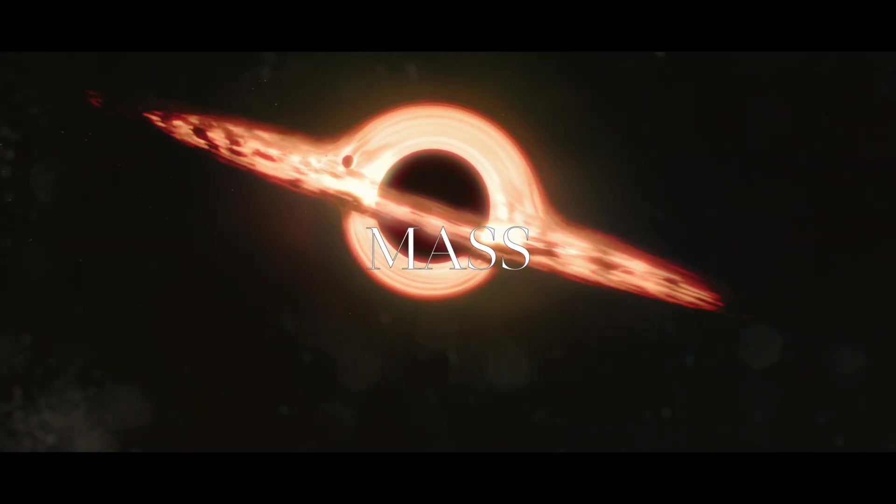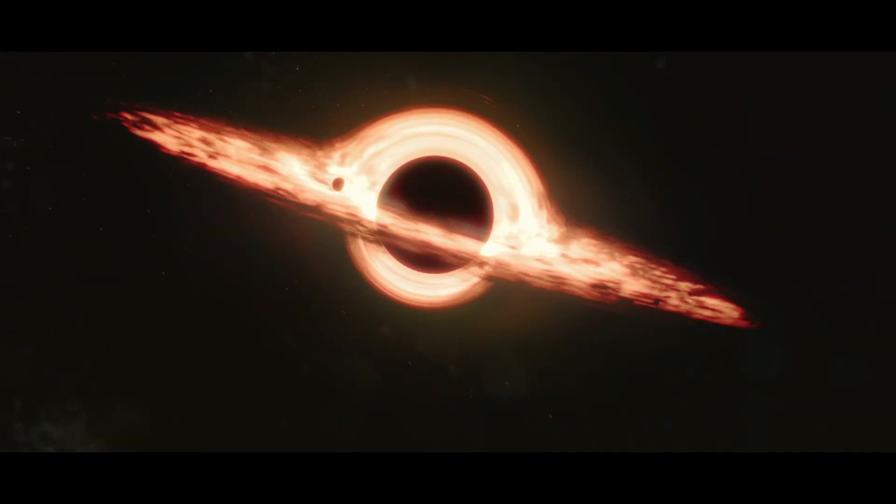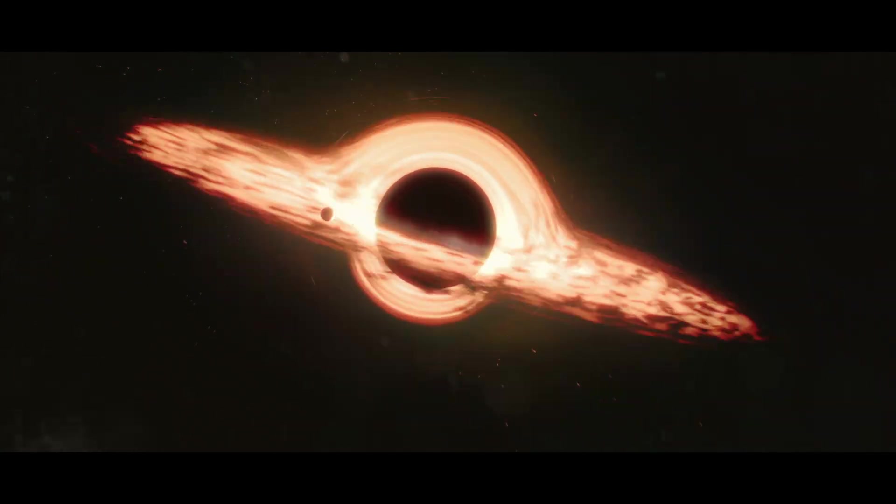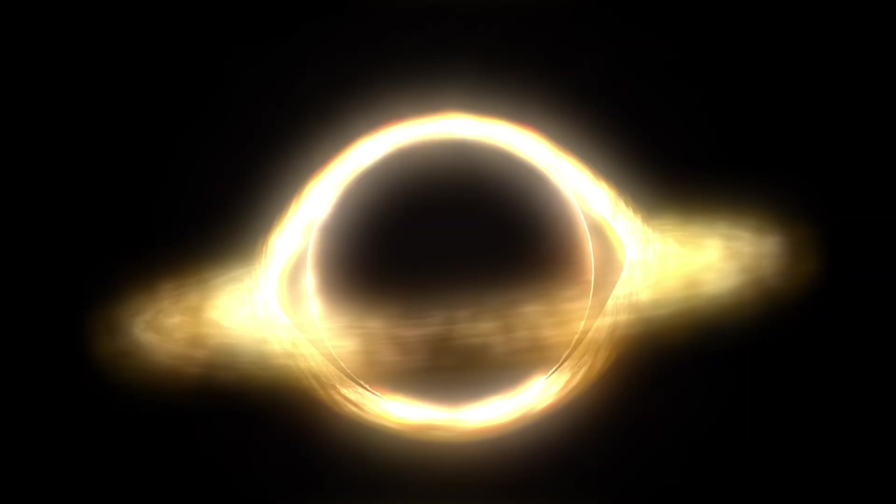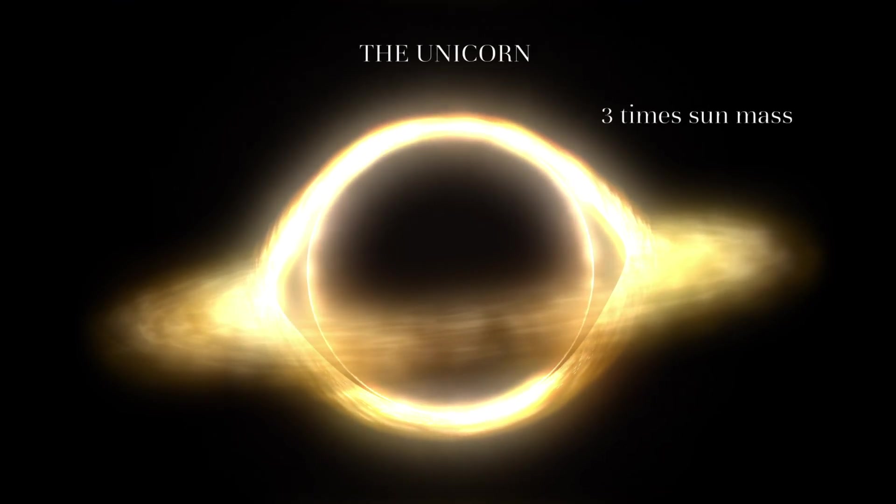So a black hole has only three measurements. Mass: by calculating gravitational effect on stars around a black hole, we can measure its mass. The smallest known black hole is only three times our sun's mass, while the biggest black hole is 66 billion times the sun's mass.